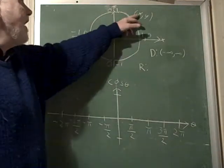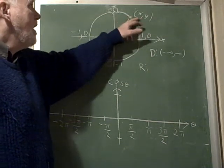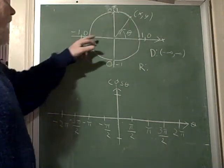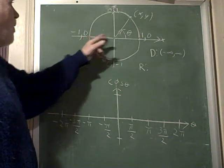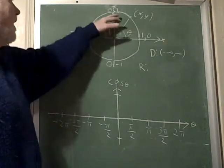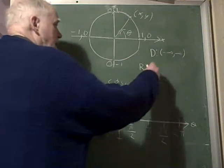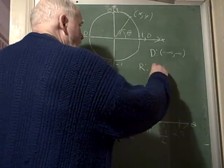Also notice, since it's the x value of the ordered pair here, that the x values only vary from negative 1 to 1, on the unit circle. So our range is going to give us only values from...